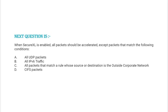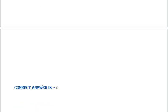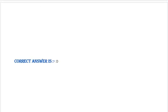Next question: When SecureXL is enabled, all packets should be accelerated except packets that match the following conditions — option A: all UDP packets, option B: all IPv6 traffic, option C: all packets that match a rule whose source or destination is outside the corporate network, option D: CIFS packets. Correct answer is option D.